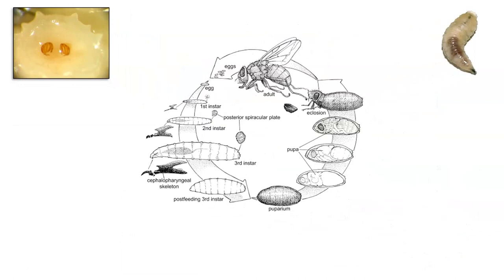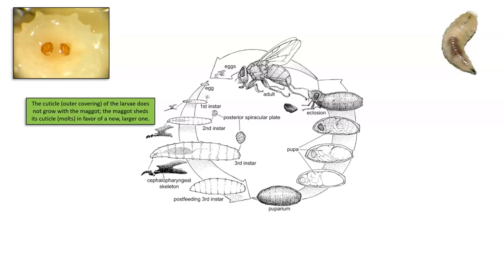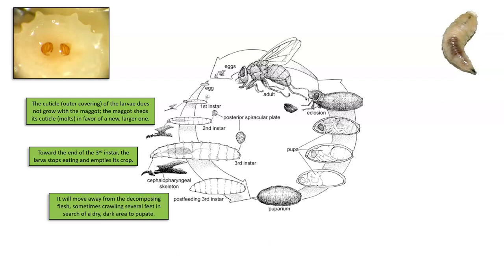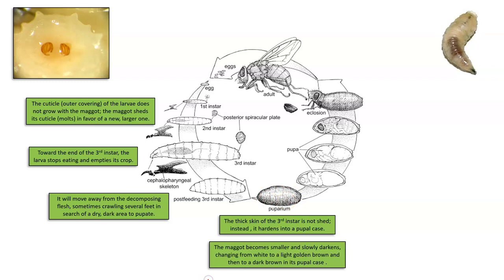The cuticle, or outer covering of the larva, does not grow with the maggot, which means the maggot has to shed the cuticle — called molting — in favor of a new one. The larva molts its covering between its first, second, and third instar stages. Towards the end of the third instar, the larva stops eating, empties its crop, and begins to move away from the decomposing flesh, sometimes crawling several feet in search of a dry, dark area to pupate. The thick skin of the third instar larvae is not shed — it hardens into a pupal case, constricting itself and becoming smaller and compressed.